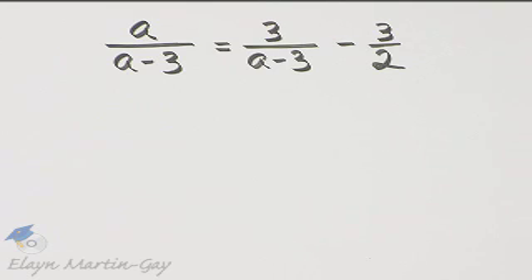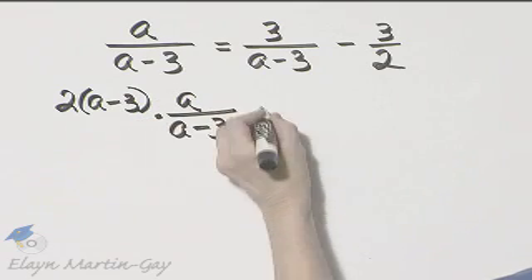I will multiply through by that, which means by the distributive property, each term is multiplied by 2 times A minus 3. So 2 times A minus 3 times the first term, A over A minus 3, is equal to 2 times A minus 3 times this term, 3 over A minus 3, and then minus 2 times A minus 3 times 3 halves.